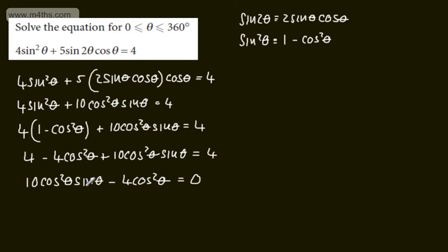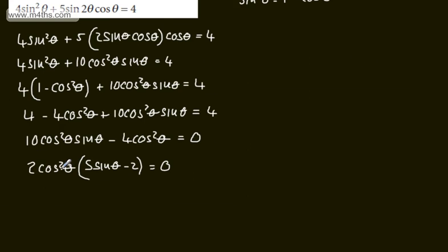I'm now going to factor this. I can take out 2 cos squared theta. So if I do that, 2 cos squared theta, then I will have now 5 sine theta minus 2 is equal to 0. So we can either now see that cos squared theta is 0 or 5 sine theta minus 2 is equal to 0.